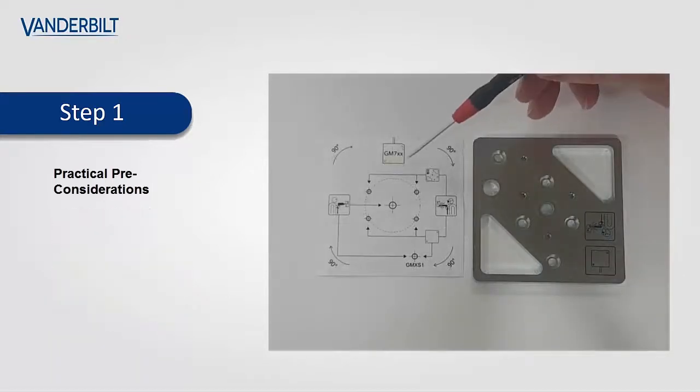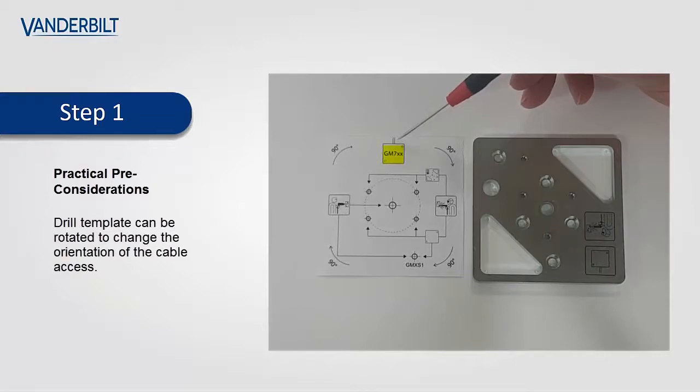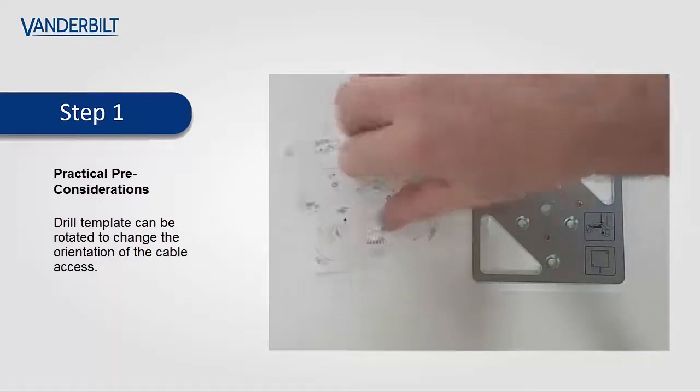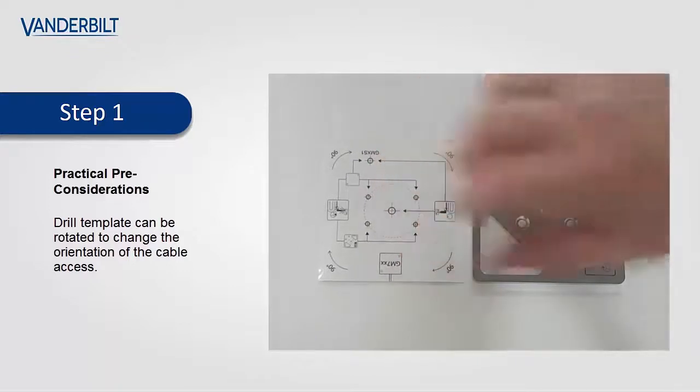The drill template always shows the detector and the cable access point. Here we have the cable installation at the top of the detector, but this can be rotated through 360 degrees. If we turn it round 180 degrees, we now have the cable access point at the bottom.